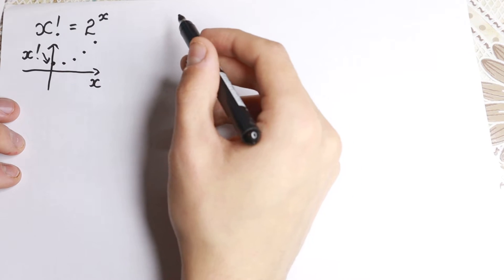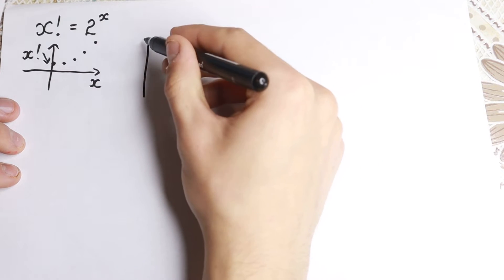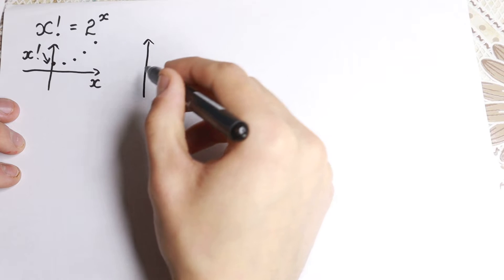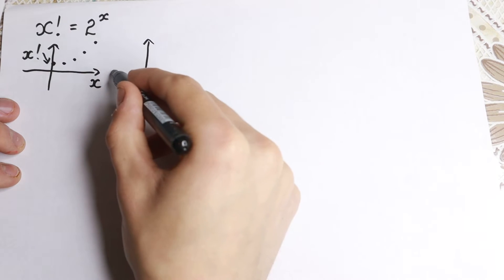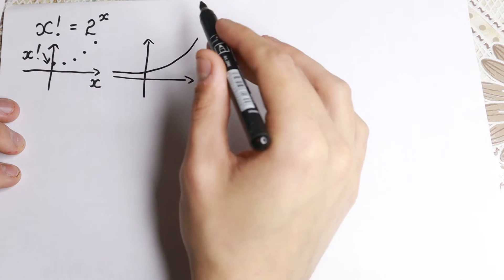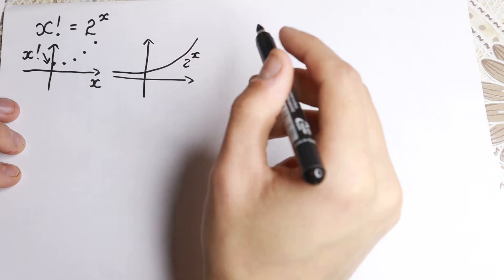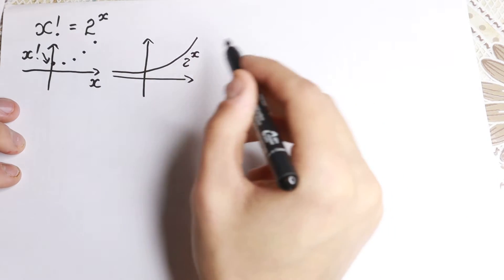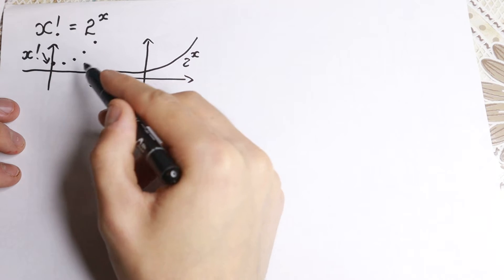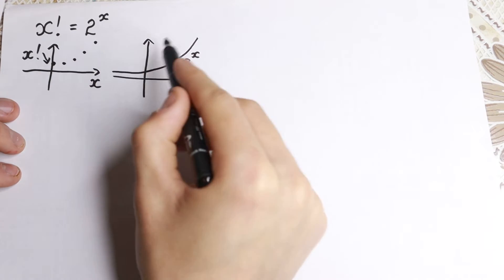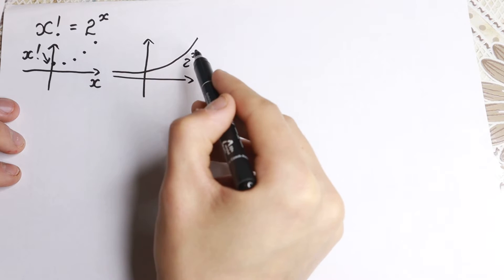And let's go to 2 to the x — this is our exponential function. We know the information about this function. It looks like that and goes to plus infinity as well. So this is our 2 to the x graph, and we can easily see that both functions look similar on the first side, and we can find our root.